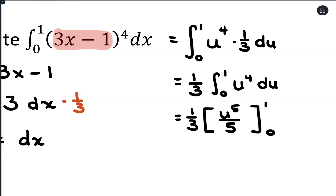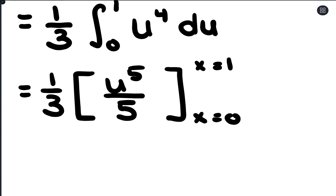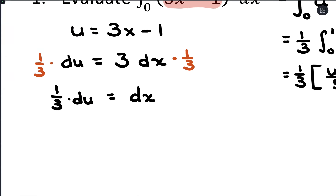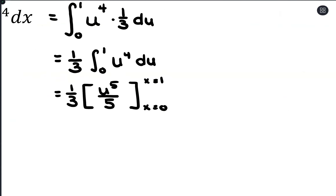Now, what's important here is that 0 and 1 are x-values — really it's x equals 0 and x equals 1. So we don't want to substitute in yet, because our variable is u, not x. So before we can evaluate the definite integral, we need to replace u. And u is equivalent to 3x minus 1.